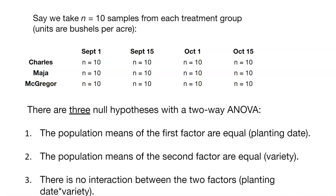The first null hypothesis is that the population means of the first factor are equal — that would mean planting date from September 1st through October 15th are all equal. The second hypothesis is that the population means of the second factor are equal — that would mean the variety, whether it's Charles, Maha, or McGregor, are all equal.